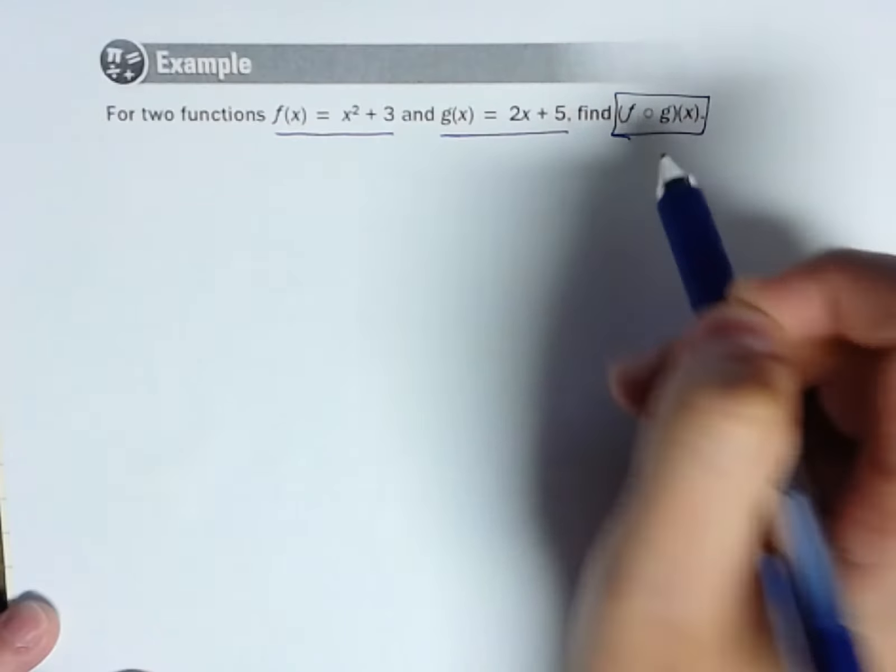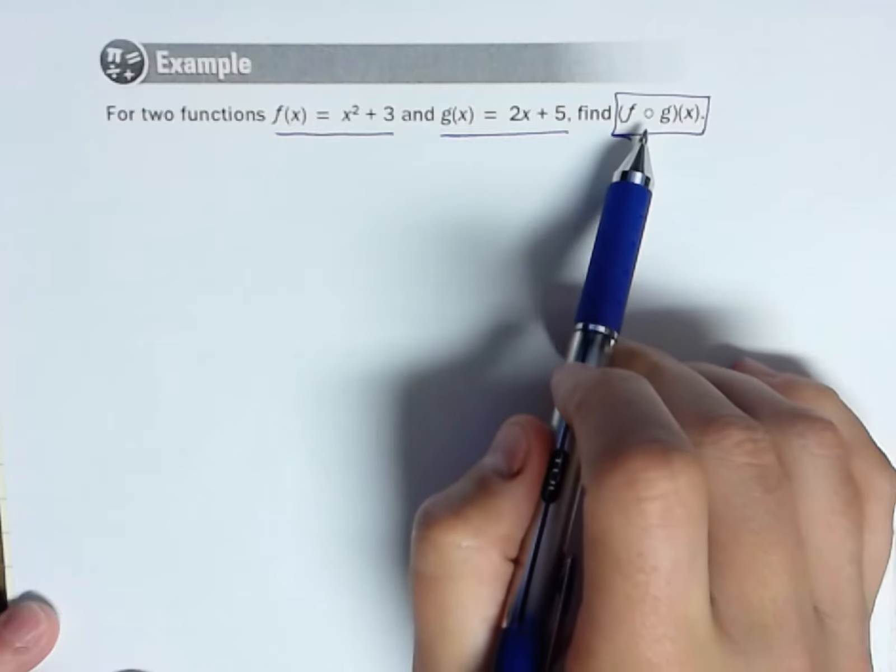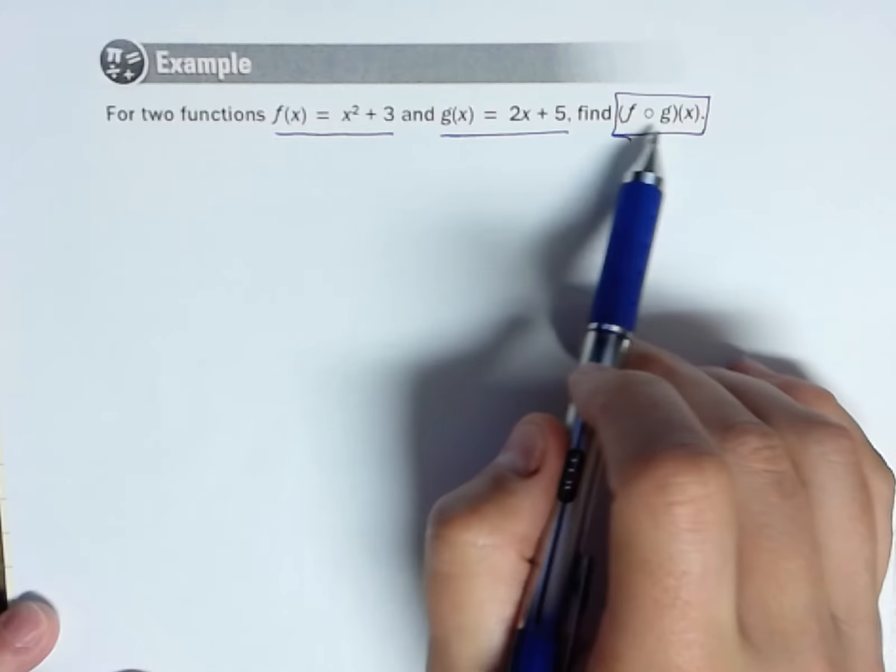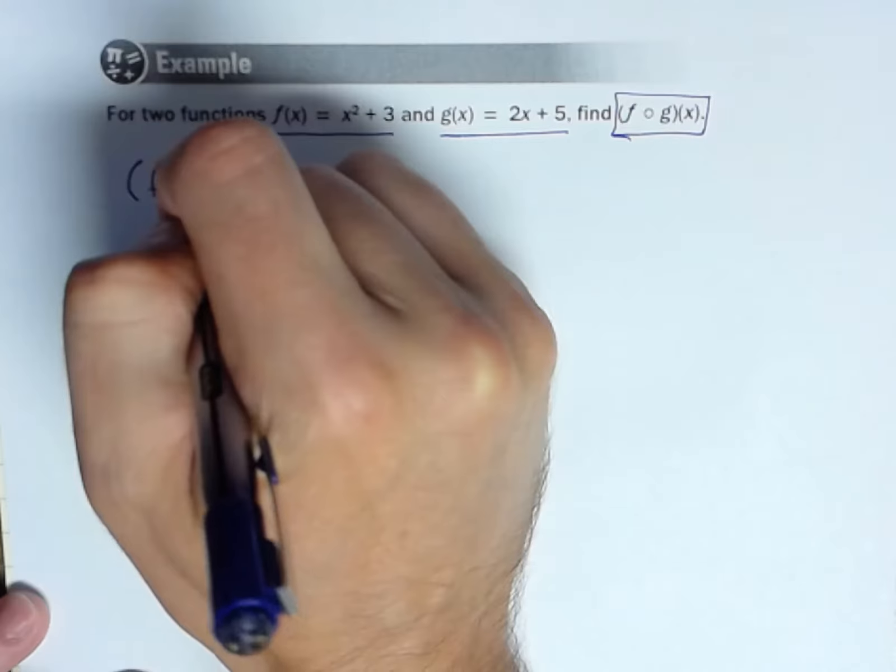They want us to find this. Now, kind of a weird notation, easy to get confused there. This does not mean multiplication. We've got this kind of open circle.